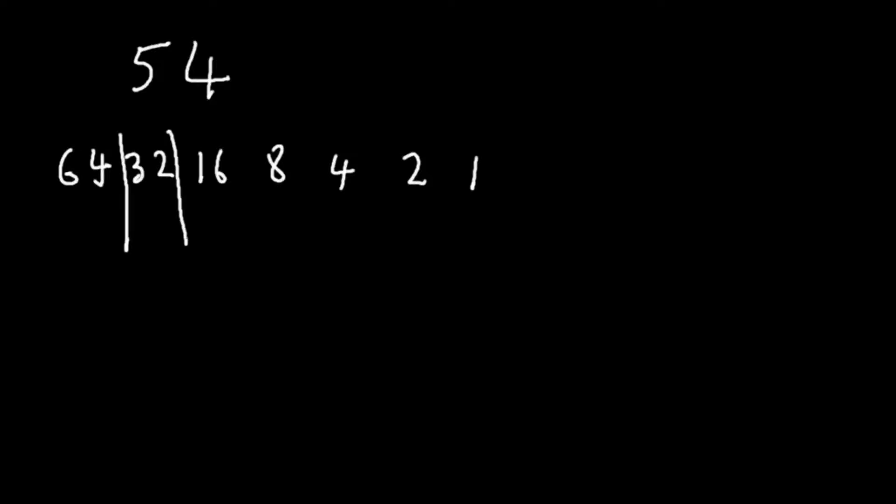We're trying to make 54, so we've got 32 there. 54 minus 32 gives us 22. So 16, that's a 16. We've got 6 left, so that's 0, 1, 0. So that's our binary representation of 54.